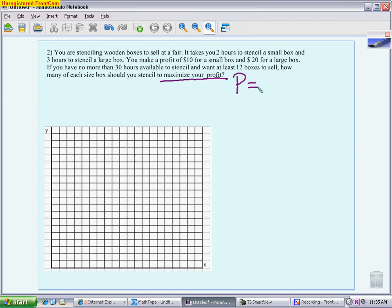The next thing you need to figure out is what are your variables going to represent. When you read through your problem, you realize you have two things that are different happening: you are stenciling small boxes and you are stenciling large boxes. You can use A and B, X and Y. I'm going to use S for small and L for large. Giving the variables meaning really makes the problem easier.